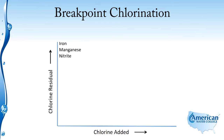As we begin to add our chlorine, as we saw earlier on our breakpoint chlorination curve, between points one and two we have iron and manganese, nitrites, sulfides, and other reducing compounds — so we have no residual in this region.